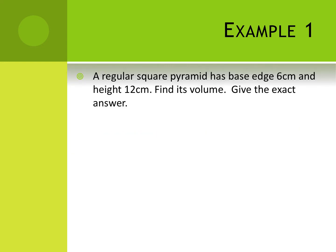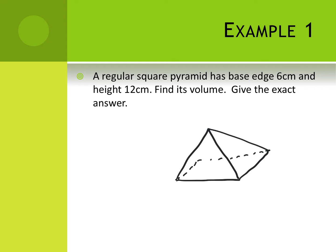The first example gives us a regular square pyramid with a base edge of six and a height of 12. It asks us to find the volume and give the exact answer. I'll sketch a square pyramid — you won't be graded on your drawings. I'll draw in the height indicated with a right angle. The height is 12 centimeters, and since it's a square, all base edges are congruent at six centimeters.